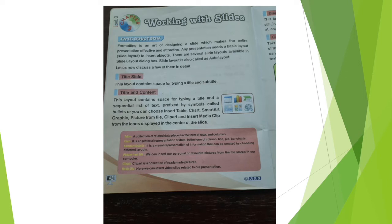A table is a collection of related data placed in the form of rows and columns. A chart is a pictorial representation of data in column, line, pie, and bar chart forms. Smart art graphic is a visible presentation of information that can be created by choosing different layouts. A picture from file means a picture you have saved which you can insert into the slide.